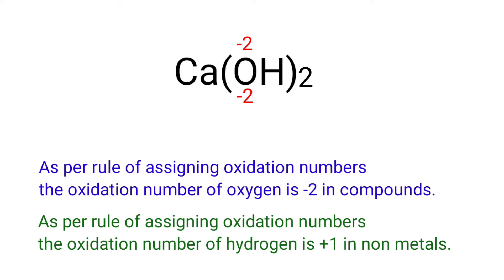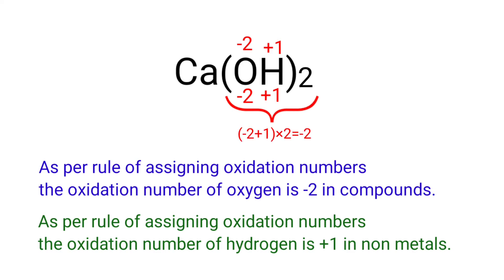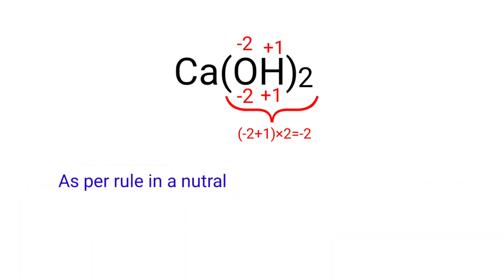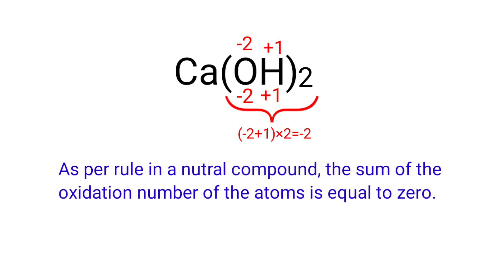As per the rule of assigning oxidation numbers, the oxidation number of hydrogen is minus 1 in all metals. As per the rule in a neutral compound, the sum of the oxidation numbers of the atoms is equal to 0.